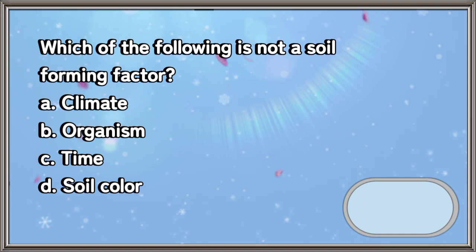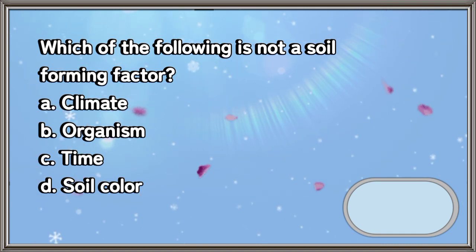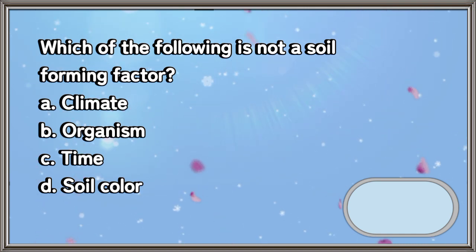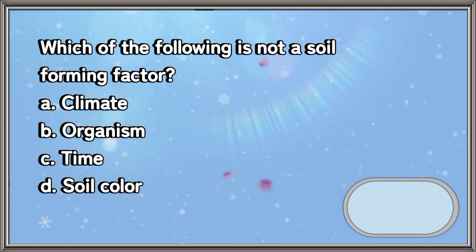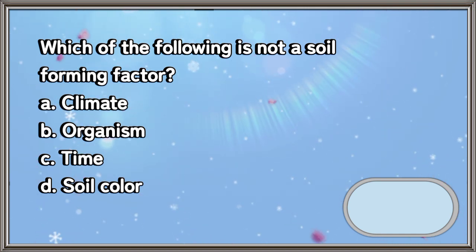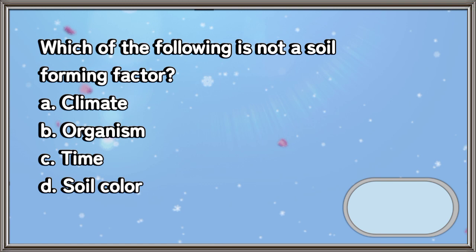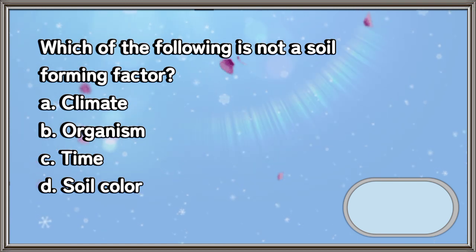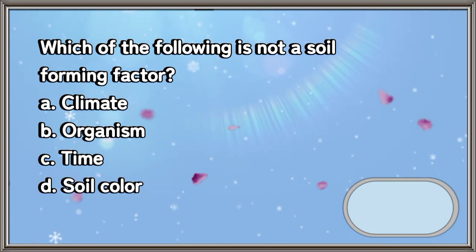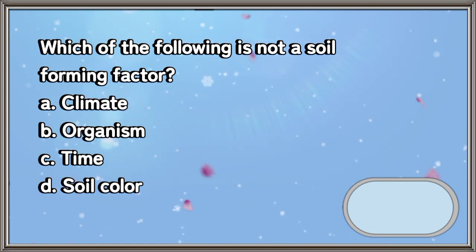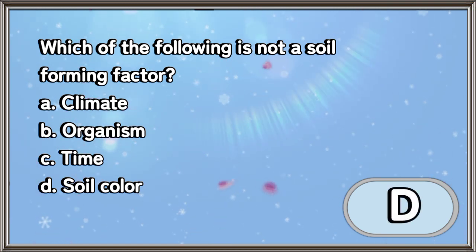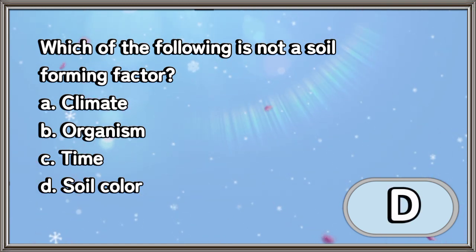Which of the following is not a soil forming factor? A. Climate. B. Organism. C. Time. D. Soil color. The answer is letter D.